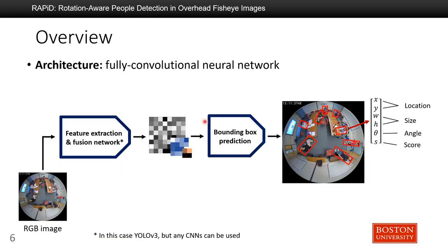Here is an overview of our proposed approach. We use a fully convolutional neural network to directly predict the bounding boxes of people. Given an input image, we first use a convolutional net to extract features at different resolution levels, in this case with DarkNet v3, but any other convolutional net can be used. After obtaining the features, we use another convolutional net to predict the bounding box parameters. Each bounding box is represented by six parameters: the center location, size, angle, and confidence score.